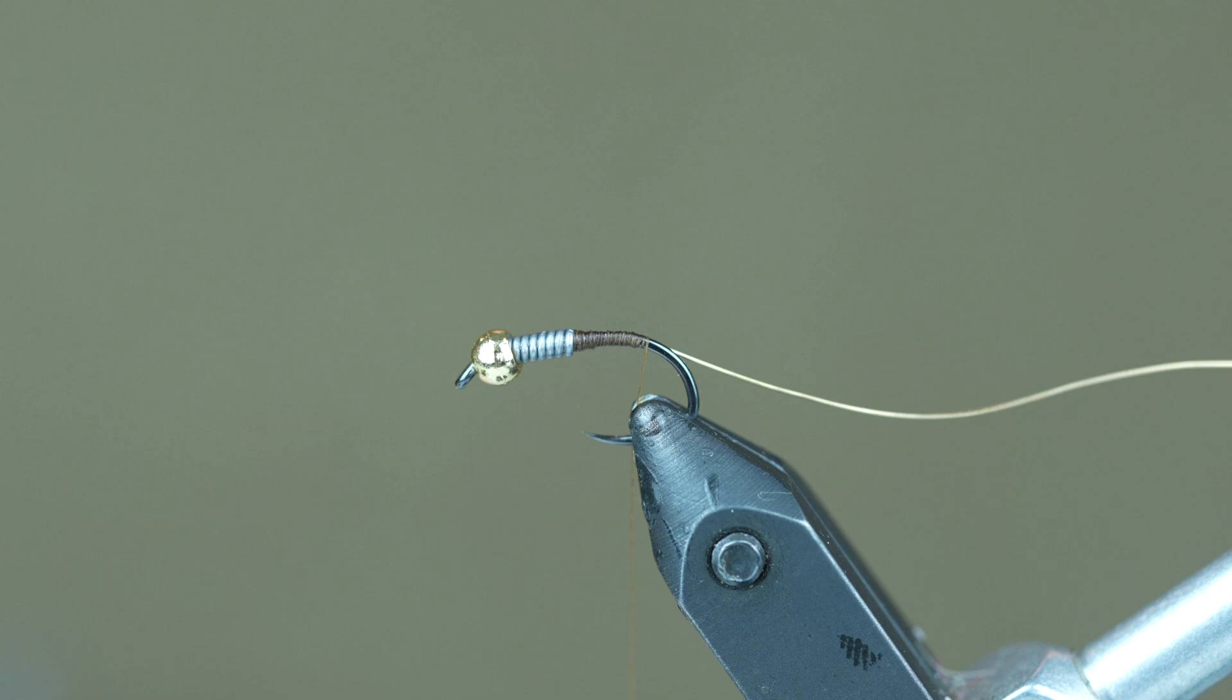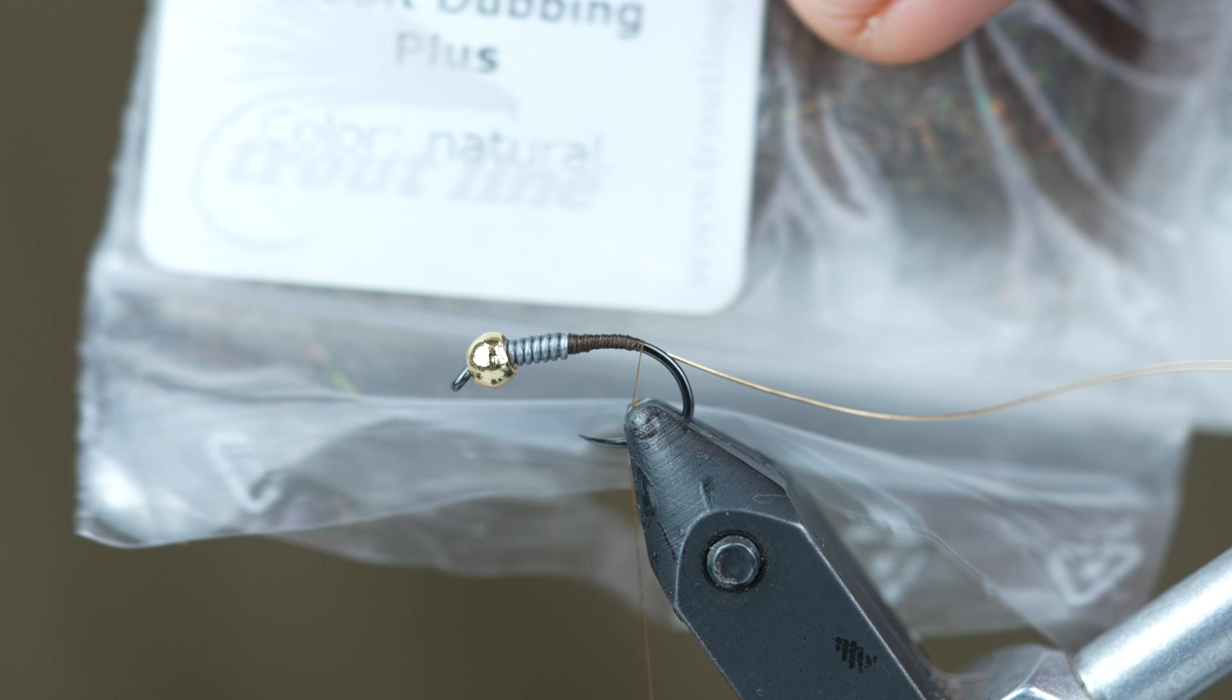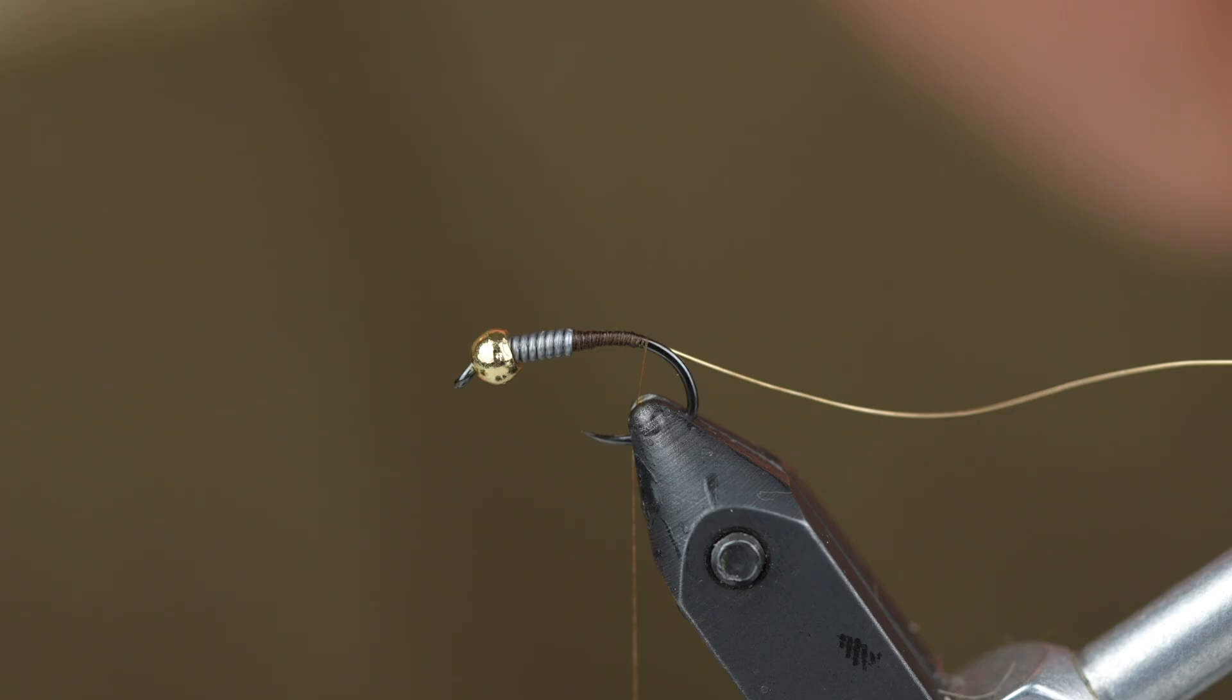I'm using the Troutline Mad Rabbit Dubbing Plus. This is a really nice dubbing, very soft. Dubs on very consistently and a little bit of flash in there just adds a touch of sparkle to the fly.